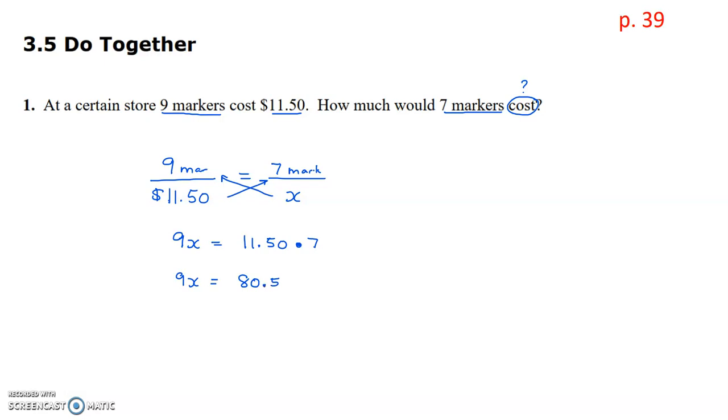And now, because I'm multiplying 9 to x, I need to divide by 9 on both sides of the equation. Canceling. And x is equal to 8.94. But remember, the question says, how much would those markers cost? So we want to make sure that we use a dollar sign, because that is what x is. X represents money, $8.94.